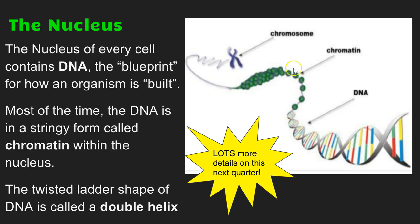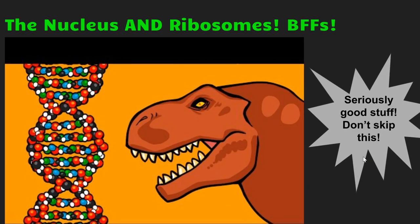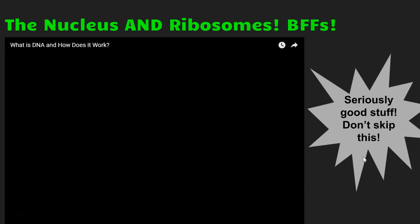Most of the time, chromatin looks kind of like a string of beads. If you were to unwind that string, you would see that twisted ladder shape of DNA — it is called a double helix. The rungs of the ladder are base pair nucleotides. These base pair nucleotides fit a certain way, and we'll talk more about that later. But we really need to talk about the nucleus because of its BFF: the ribosomes.